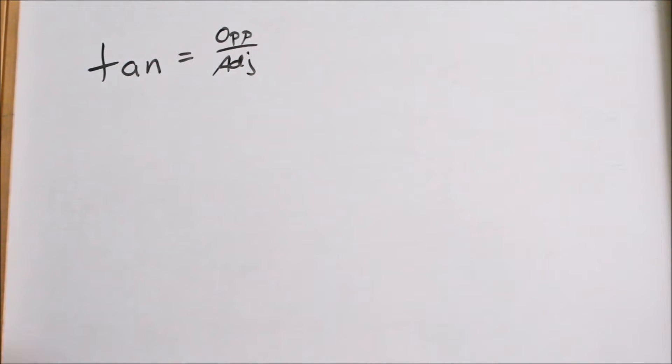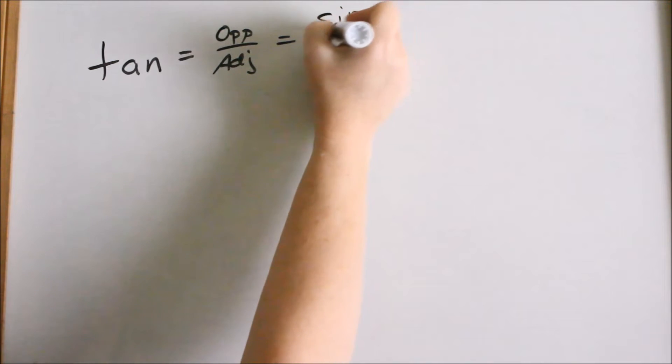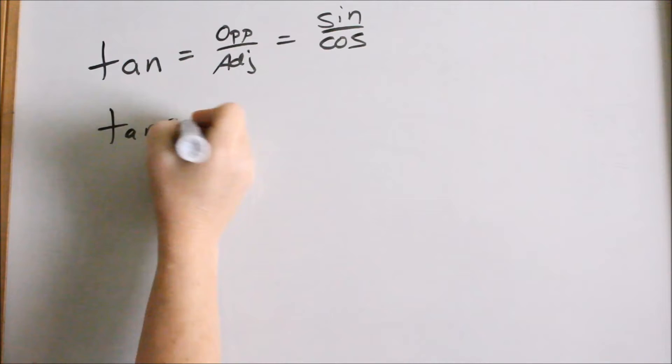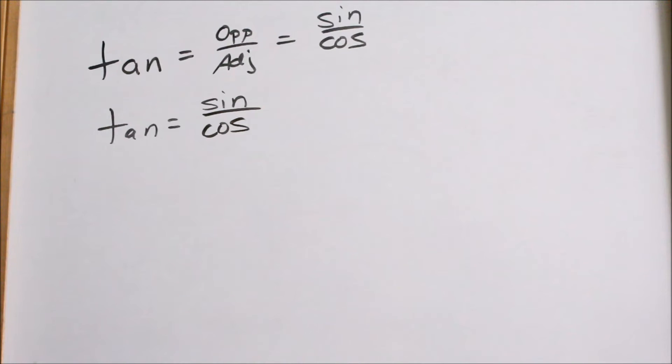Also, by definition, tangent is also equal to sine over cosine. Okay, so when we start doing trig proofs, one of the things that you can use by definition is that tangent equals sine over cosine.